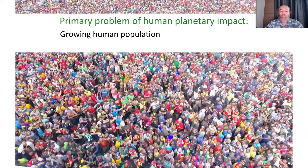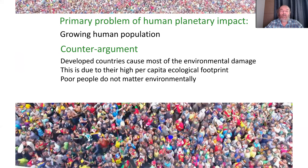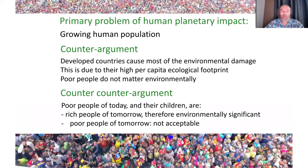The counter-argument is that it's developed countries which cause most environmental damage because they have a high per capita ecological footprint, and that poor people do not matter environmentally. But this argument implies only two options: either poor people of today will be the rich people of tomorrow and therefore environmentally significant, or they will remain poor forever — which implies that certain populations will never escape poverty and remain ecologically insignificant, and that is not an acceptable argument.